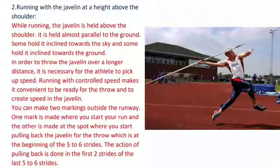Second, running with the javelin at a height above the shoulder. While running, the javelin is held above the shoulder, almost parallel to the ground. Some hold it inclined towards the sky and some inclined towards the ground. In order to throw the javelin over a longer distance, it is necessary for the athlete to pick up speed. Running with controlled speed makes it convenient to be ready for the throw and to create speed in the javelin. You can make two markings outside the runway: one where you start your run, and the other at the spot where you start pulling back the javelin, which is at the beginning of the last 5-6 strides. This action of pulling back is done in the first two strides of the last 5-6 strides.